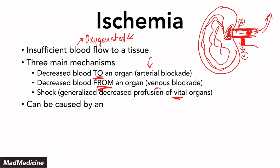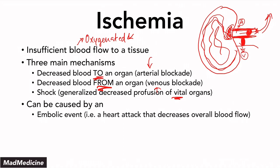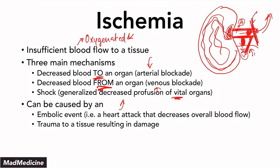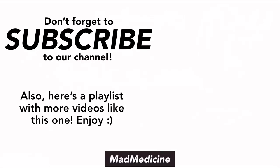Ischemia can be caused by an embolic event like a heart attack, which essentially causes a type of shock, or you can have an embolus occurring in an artery or even a vein. You can have a thrombus form, or you can have trauma — damage to the vasculature at the tissue level that causes ischemia as well. For example, if the renal artery or vein gets cut, you're not going to have enough blood going to or from the organ. Trauma and emboli are the main causes of ischemia.